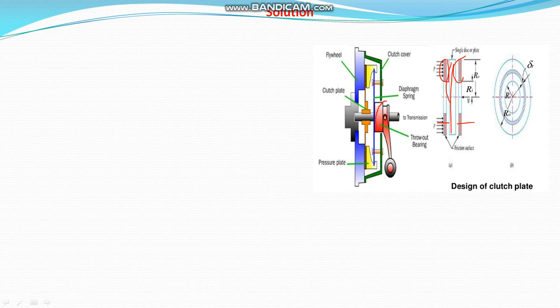This is the hollow one, because the shaft and everything has to work — the axis and the axle should be there. That's why it is not solid, which is why it has an inner radius and an outer radius. So it's a disk type.